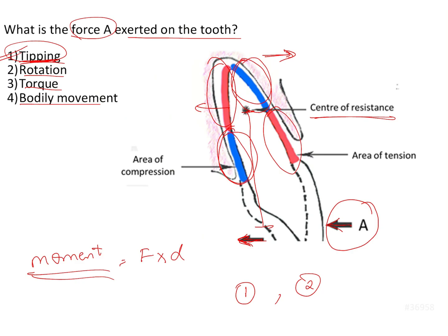So these are what the various loading diagrams look like for the various types of tooth movement, brought about by different types of forces acting upon the tooth. Based on the force being applied and the loading diagram shown in this image, the type of tooth movement this force is going to bring about is tipping movement.